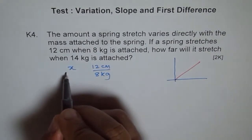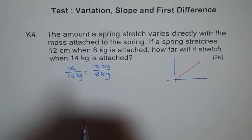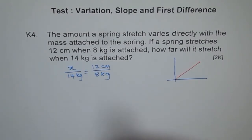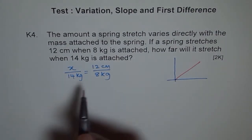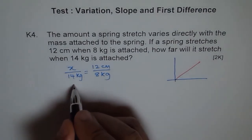Then x centimeters over 14 kg should equal 12 centimeters over 8 kg. So it's a proportion, right? From here we can calculate what x is. So what is x? x equals 12 divided by 8 times 14.